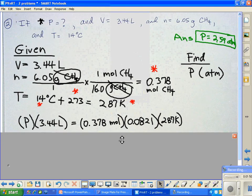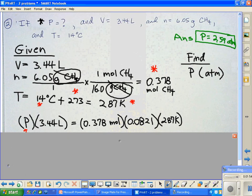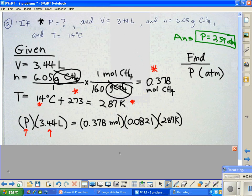You'll see that P, right here, P is our pressure. That's our unknown. The 3.44 liters was from our given up here. That's the volume. The 0.378 comes from right here, which was our calculated moles. And then the 0.0821, that was taken from the constant, which is always the same.